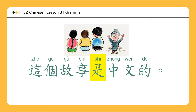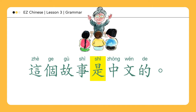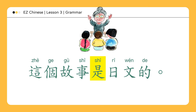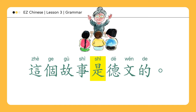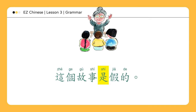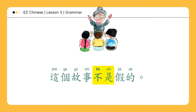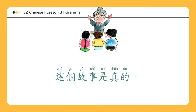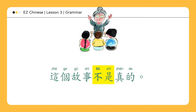Let us use this opportunity to learn a few Chinese characters. 这个故事是中文的。 This story is in Chinese. 这个故事是日文的。 This story is in Japanese. 这个故事是德文的。 This story is in German. 这个故事是假的。 This story is false. 这个故事不是假的。 This story is true — this story is not false. 这个故事是真的。 This story is true. 这个故事不是真的。 This story is not true.